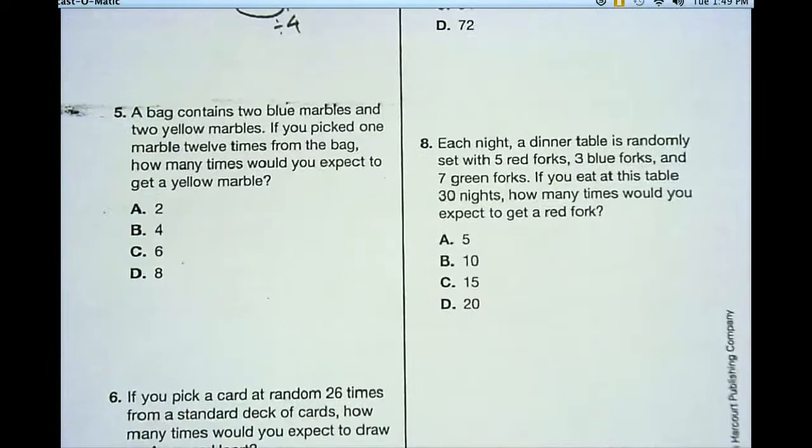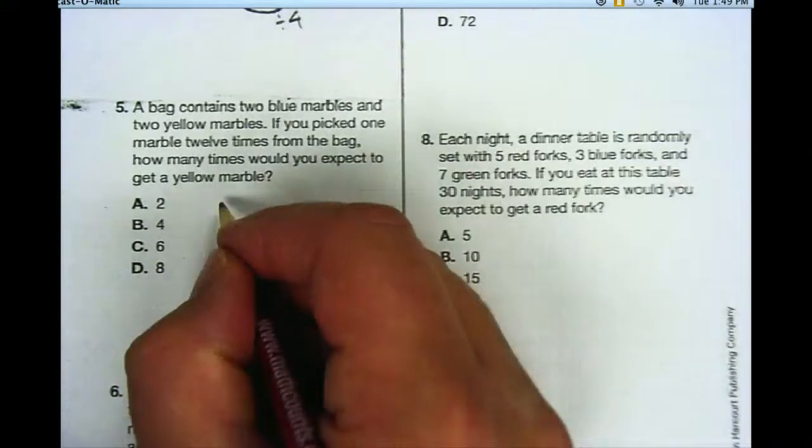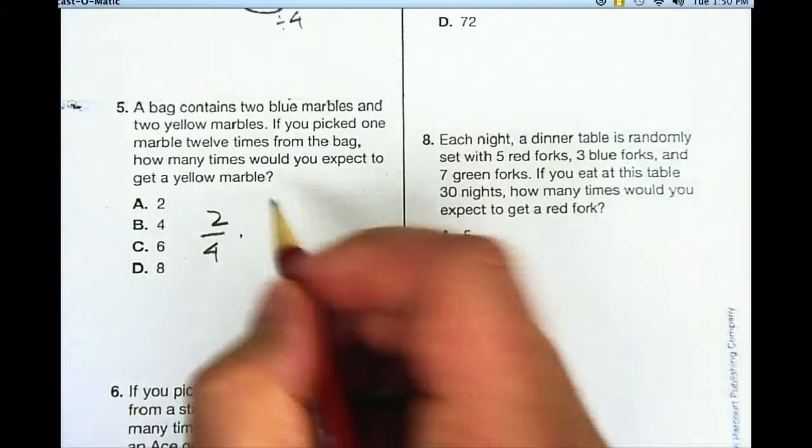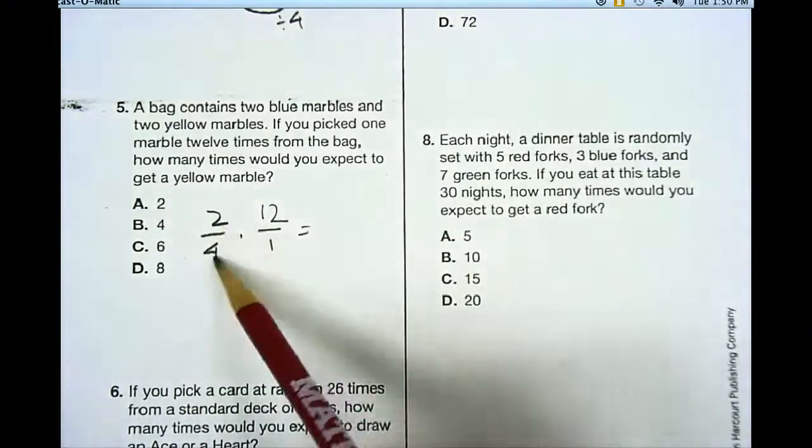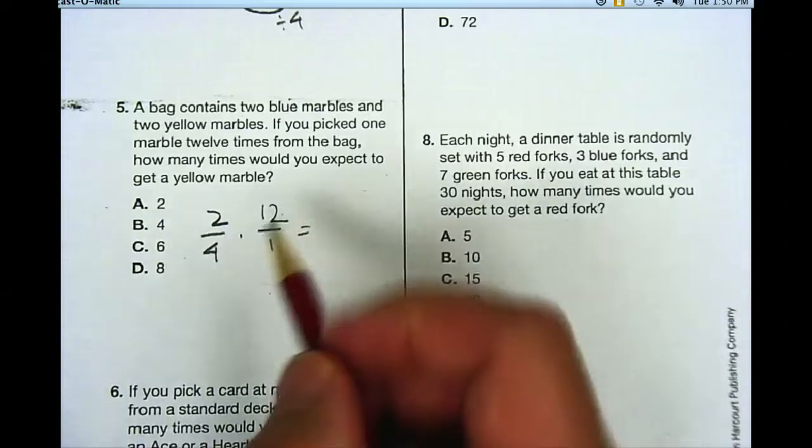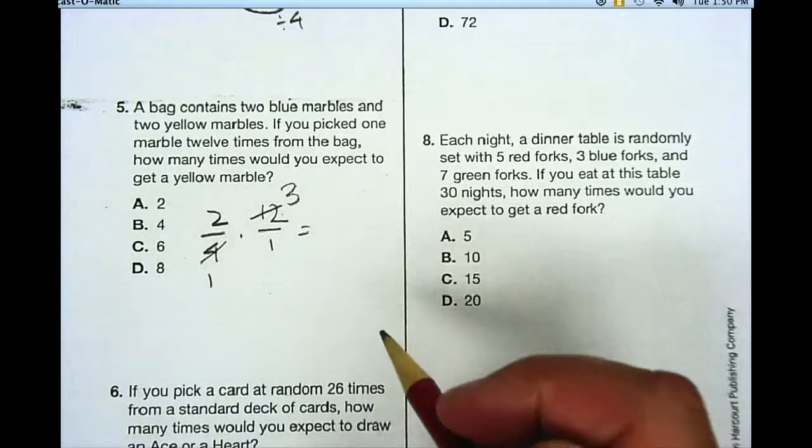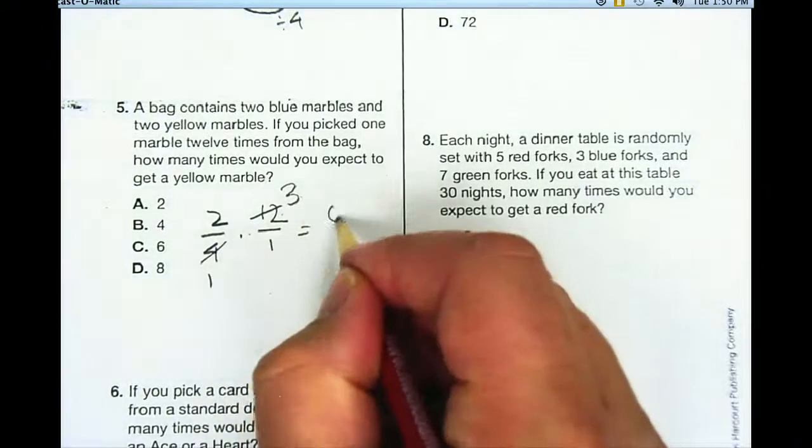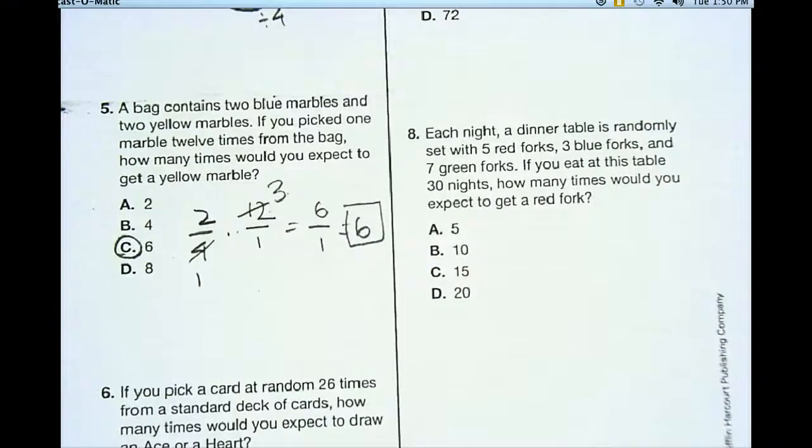Okay, let's go on to number five. A bag contains two blue marbles and two yellow marbles. If you pick one marble 12 times from the bag, how many times would you expect to get a yellow marble? So I have four marbles total, and two of them are yellow, so I have a 2 out of 4 chance to get a yellow marble. And I'm going to do this 12 times, so I'm going to multiply it by 12 over 1. Now I can reduce it. I have a 4 and a 12. They both can divide by 4. 12 divided by 4 is 3, 4 divided by 4 is 1. Now I can multiply the top and the bottom. 2 times 3 is 6. 1 times 1 is 1. So my answer is 6 for that. So I get letter C for that one also.